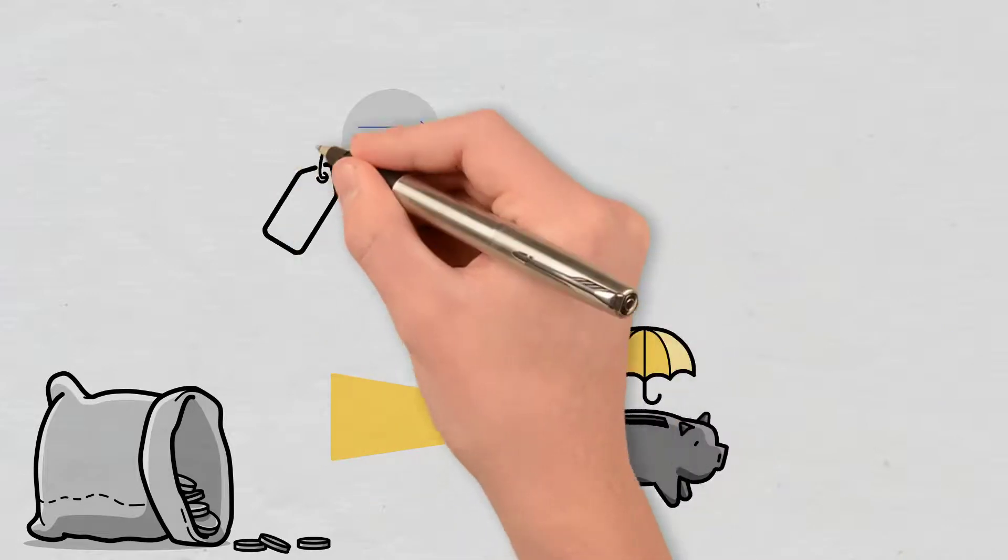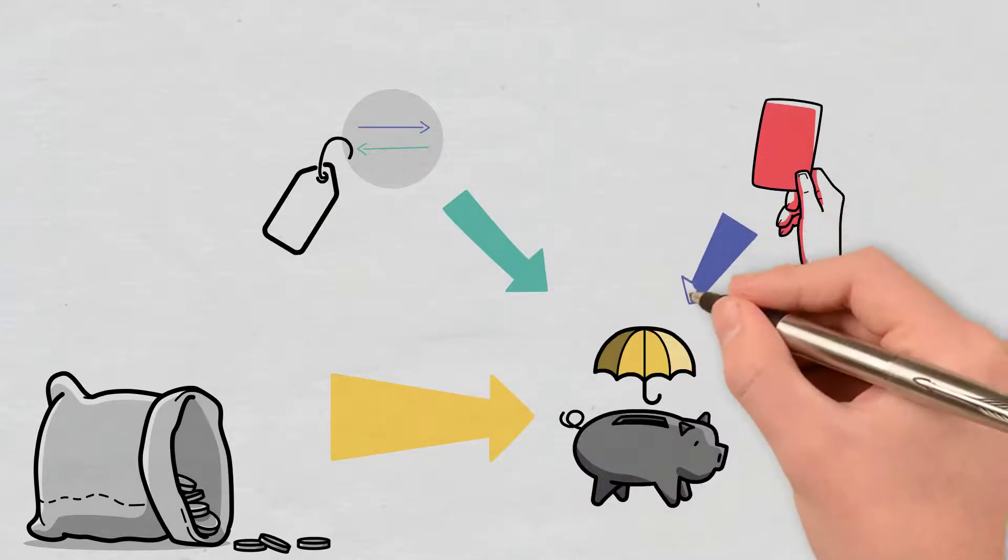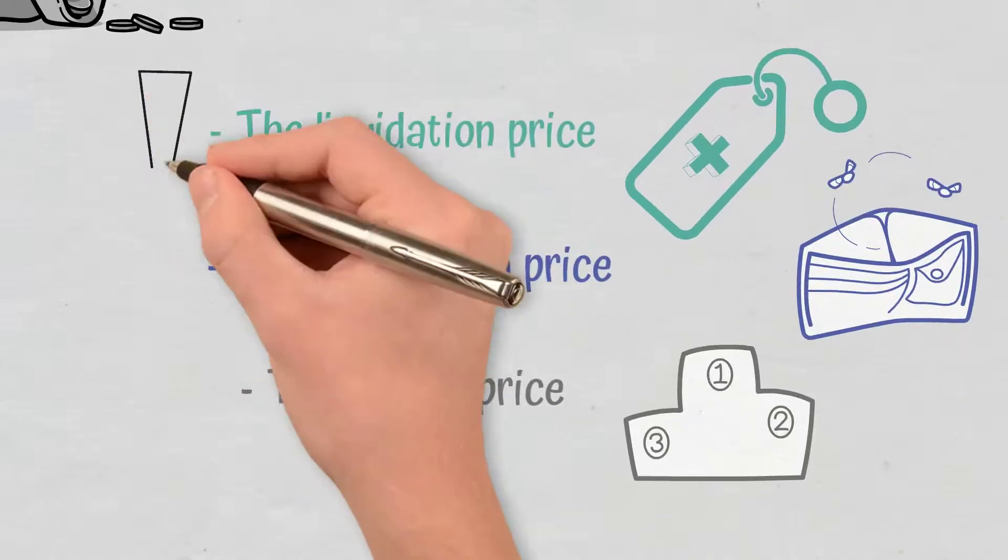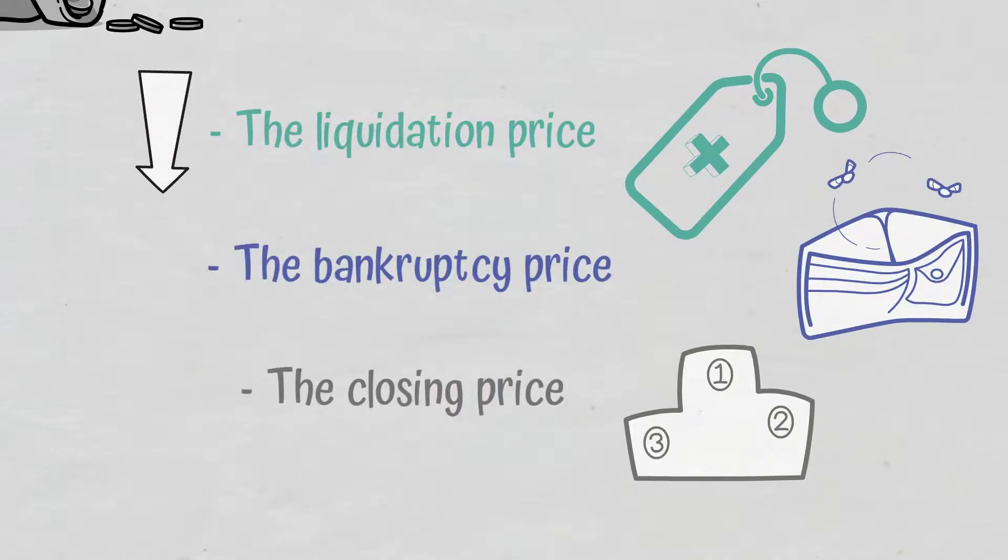However, these funds also use other sources to be funded, such as exchange fees and liquidation penalties. On the other hand, if the liquidation price of a position goes lower than its bankruptcy price, the insurance fund will cover the loss.